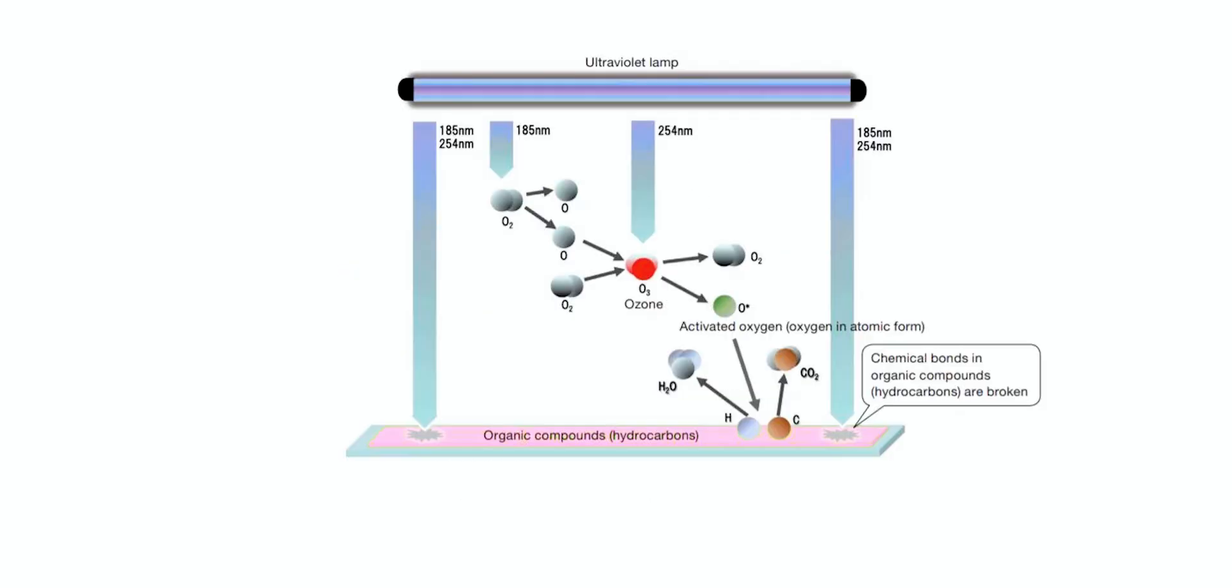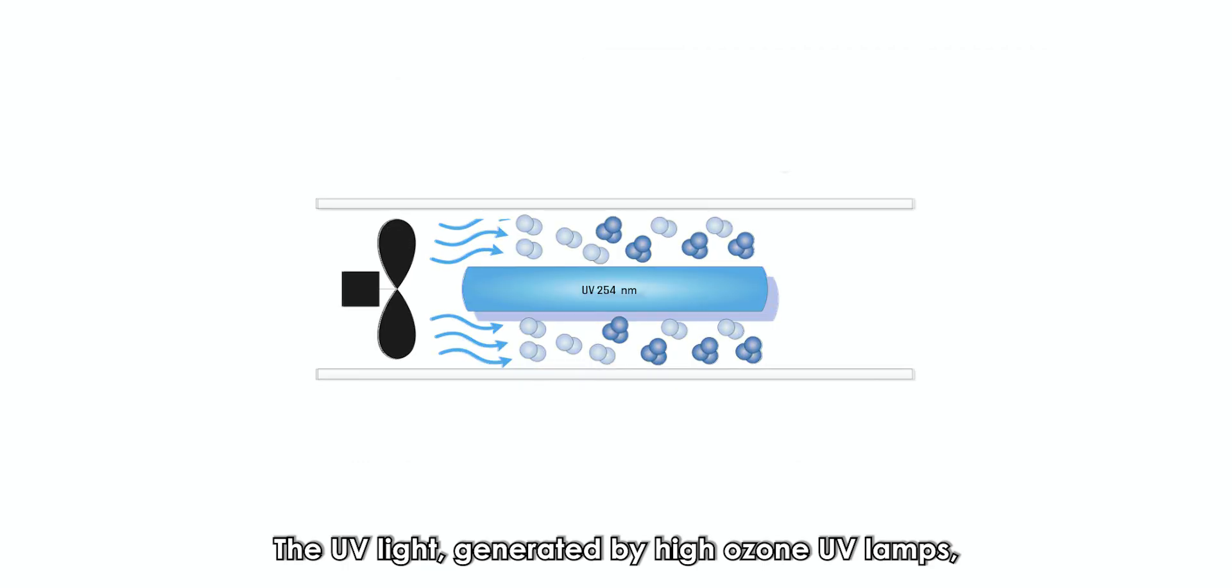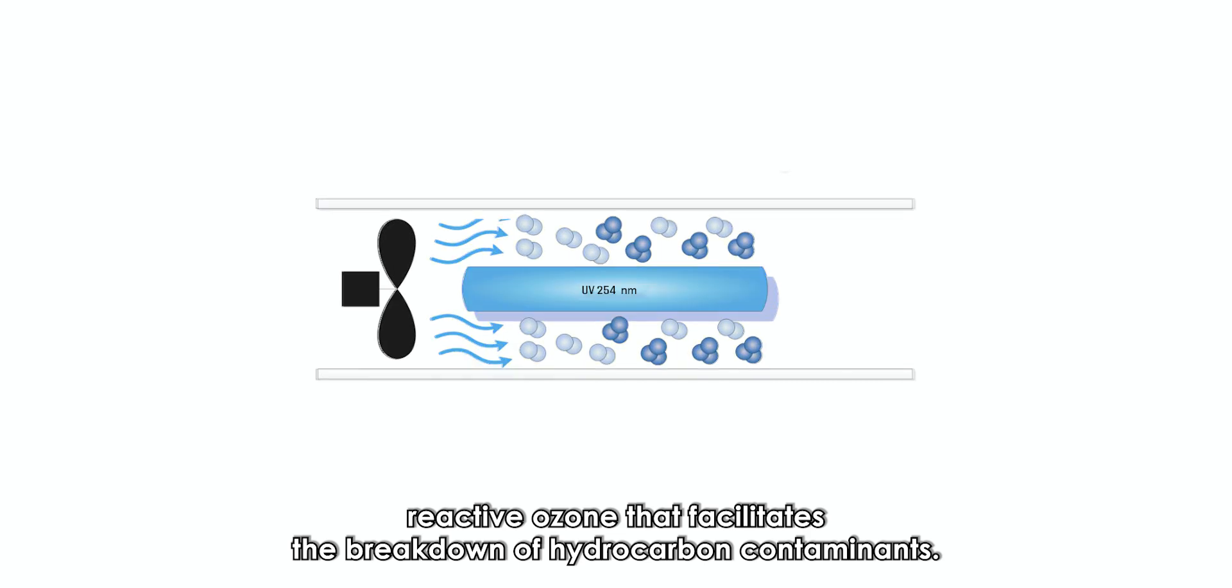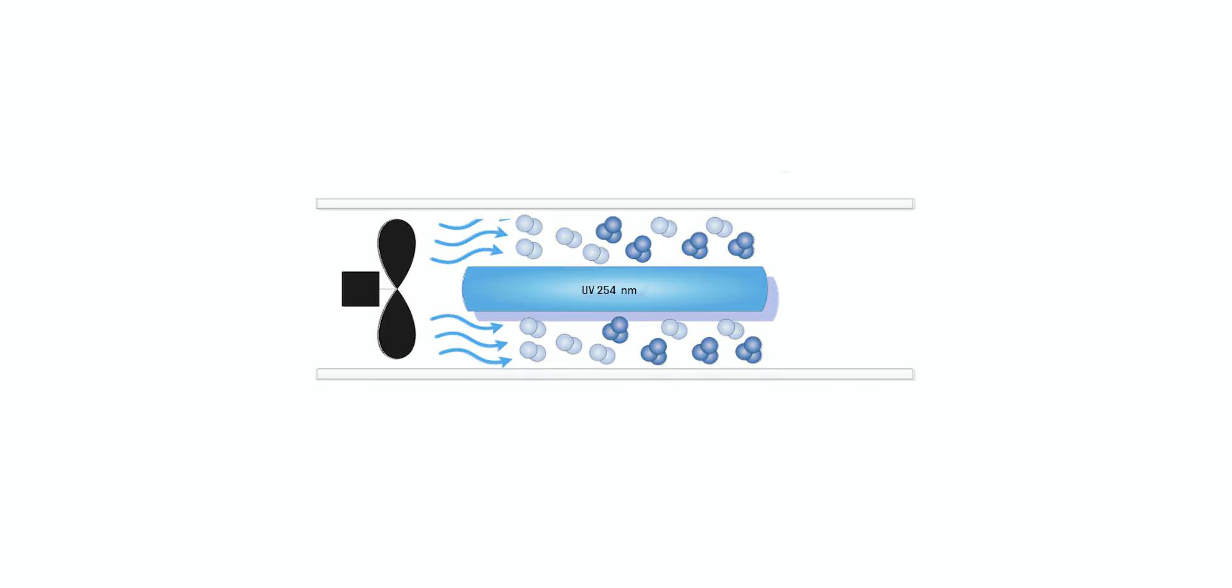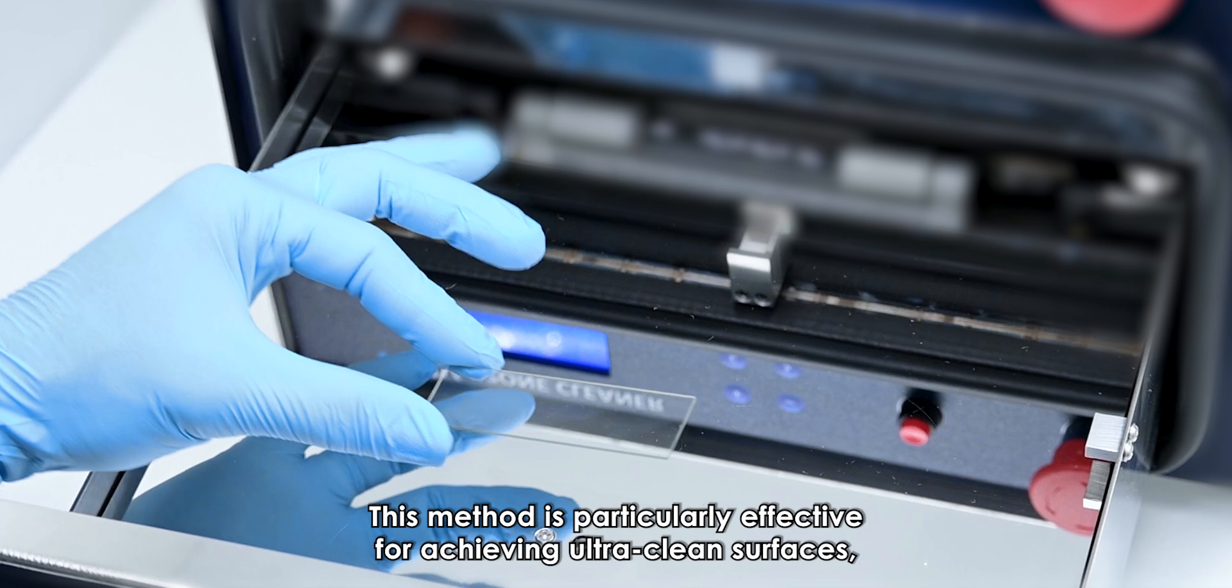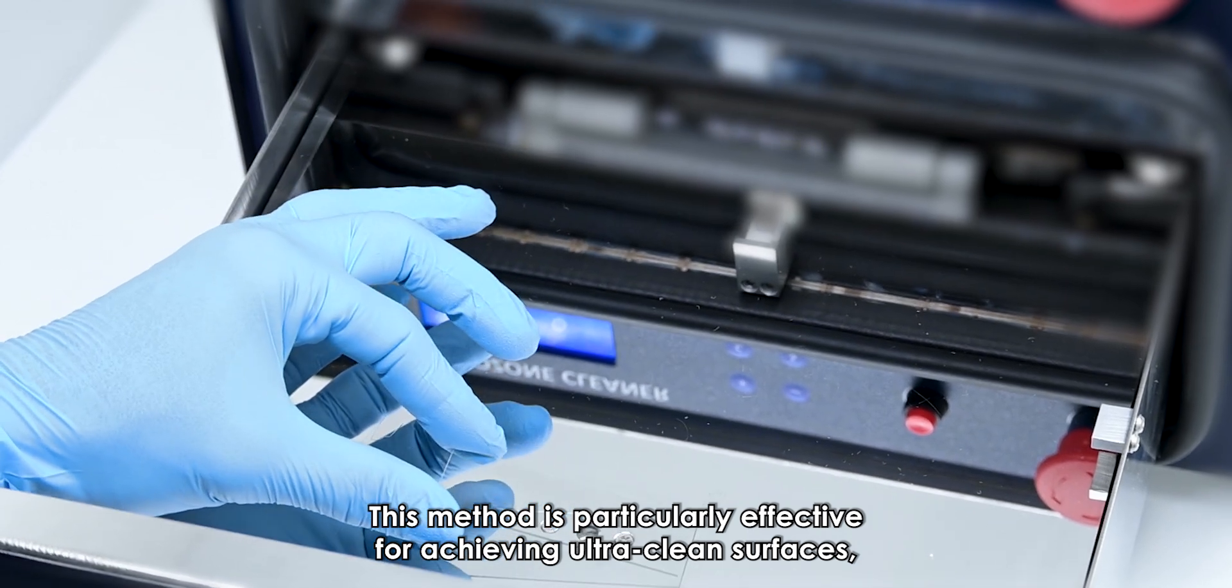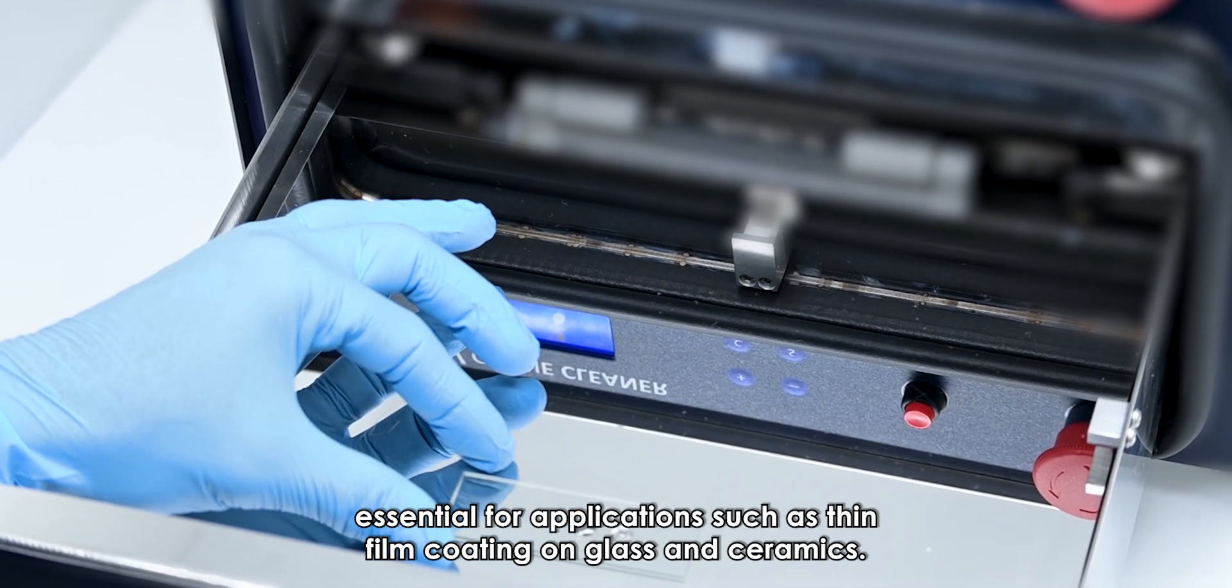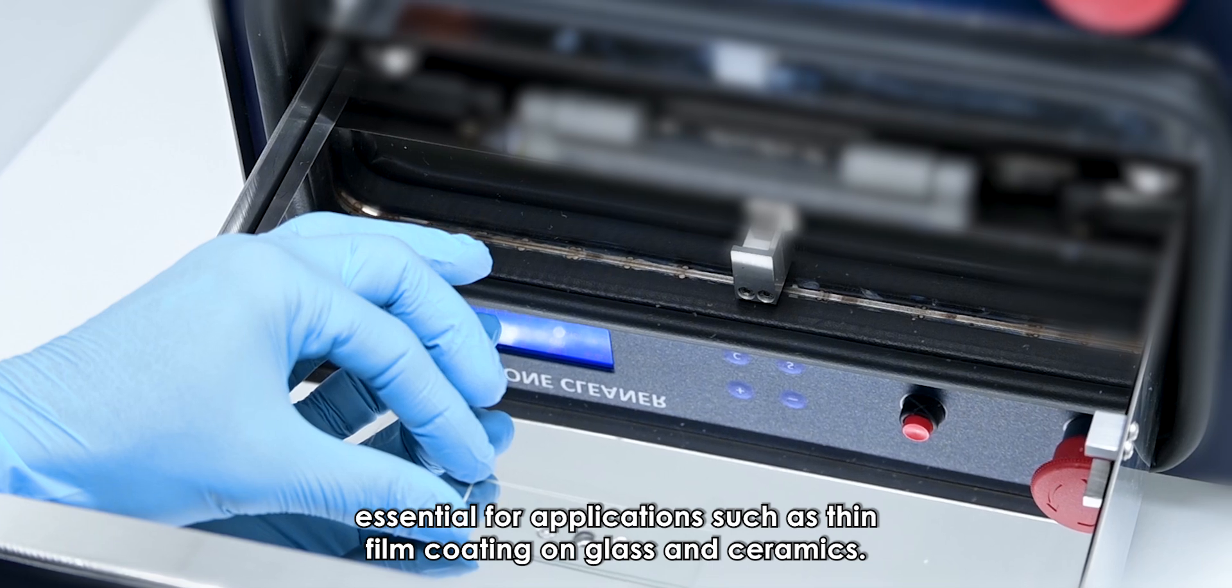The UV light generated by high ozone UV lamps operates at wavelengths of 185 nanometers and 254 nanometers and excites oxygen molecules to form reactive ozone that facilitates the breakdown of hydrocarbon contaminants. This method is particularly effective for achieving ultra-clean surfaces essential for applications such as thin film coating on glass and ceramics.